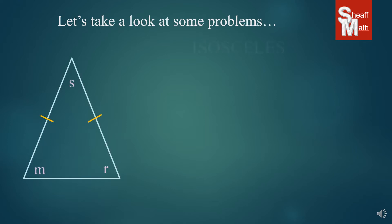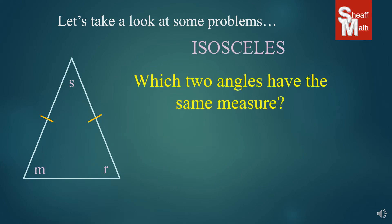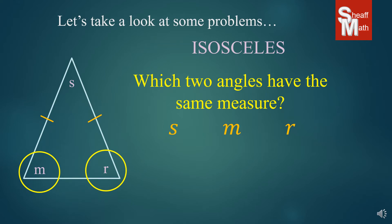So suppose we have this isosceles triangle, and the question says which two angles have the same measure? Looking at angles S, M, and R — well, we know that the two legs attached to the base angles are going to be equal. So M and R are the ones that are the same measure. S is different as far as we know; we don't have any proof that it's the same.